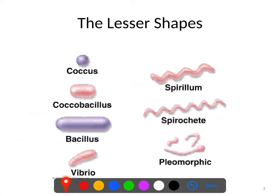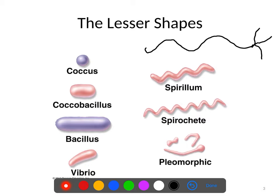Here are some of the other forms you'll find. First off, spirillum — you'll usually find it as a kind of gentle wave sort of shape. Often, though not always, you'll find flagella coming off of both ends. Spirillum are pretty much all going to be gram negative.